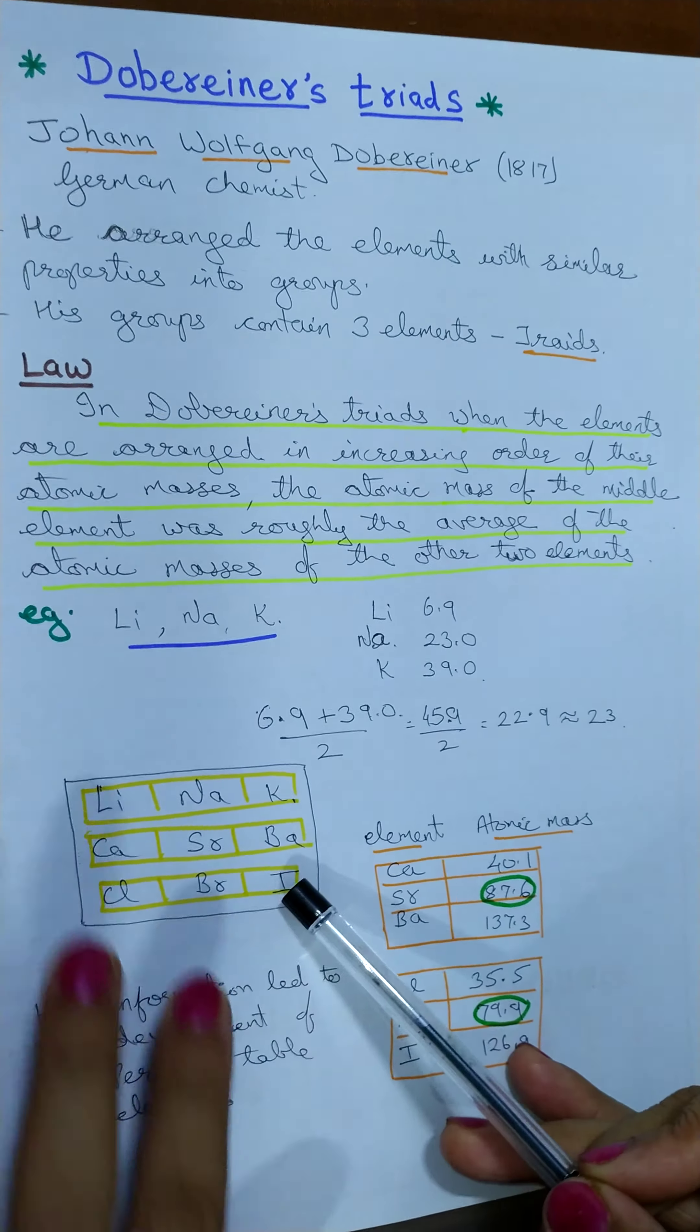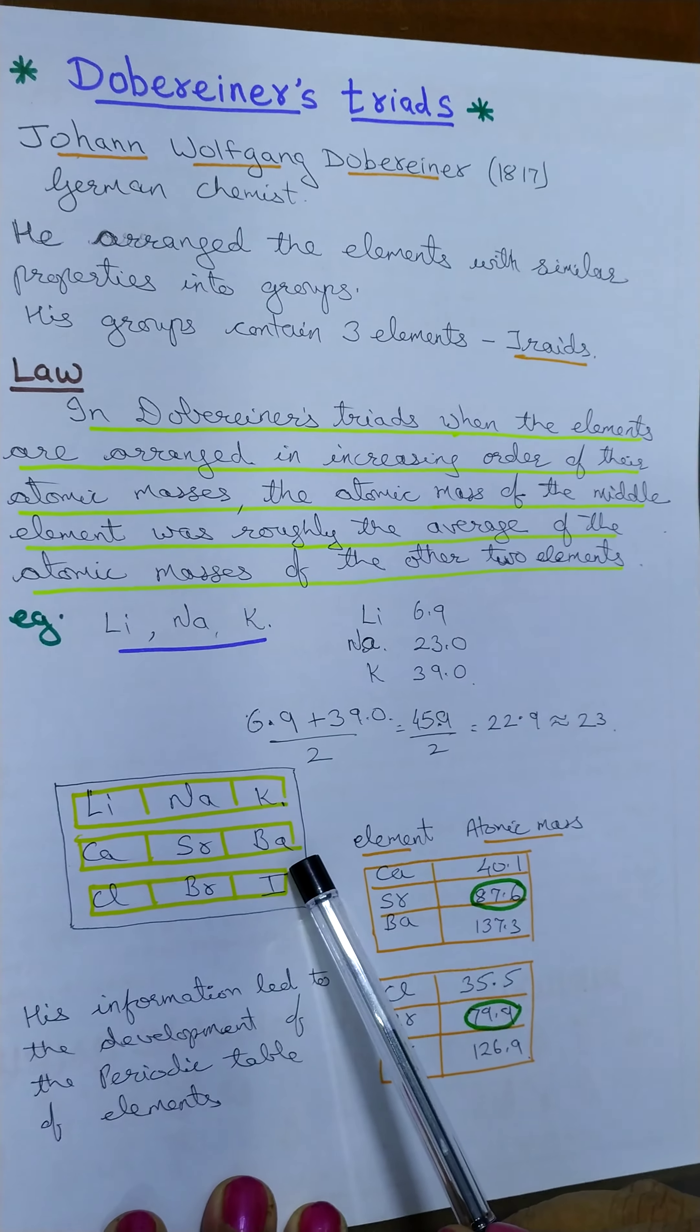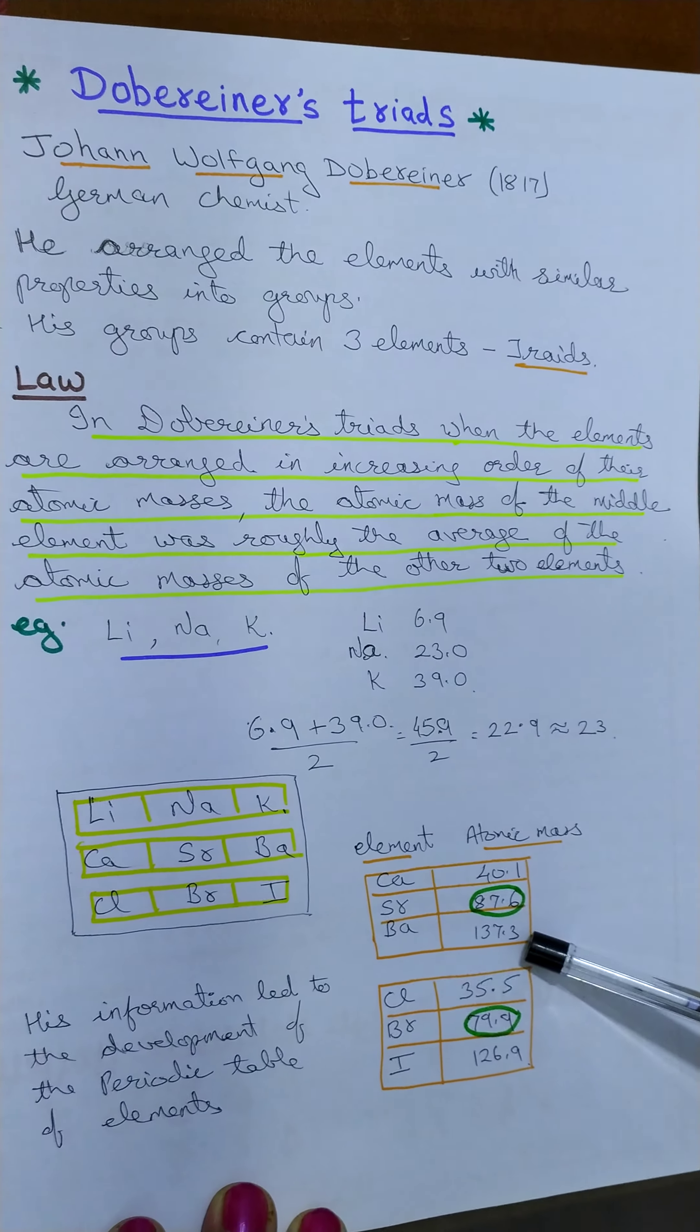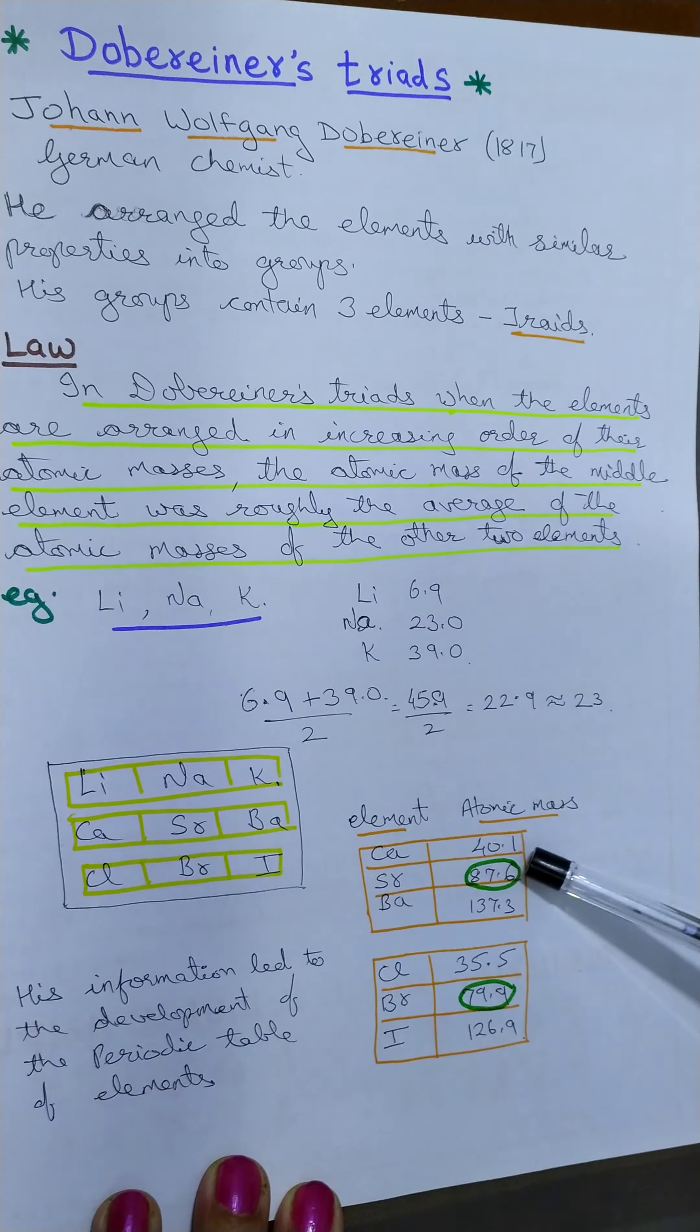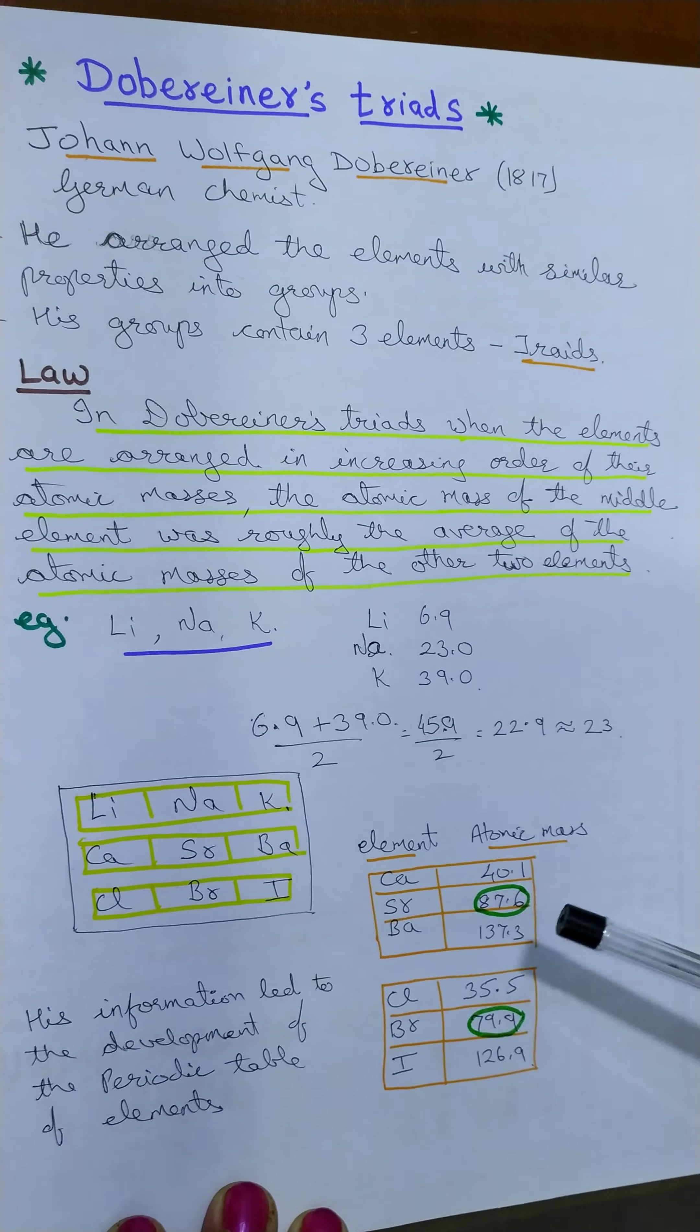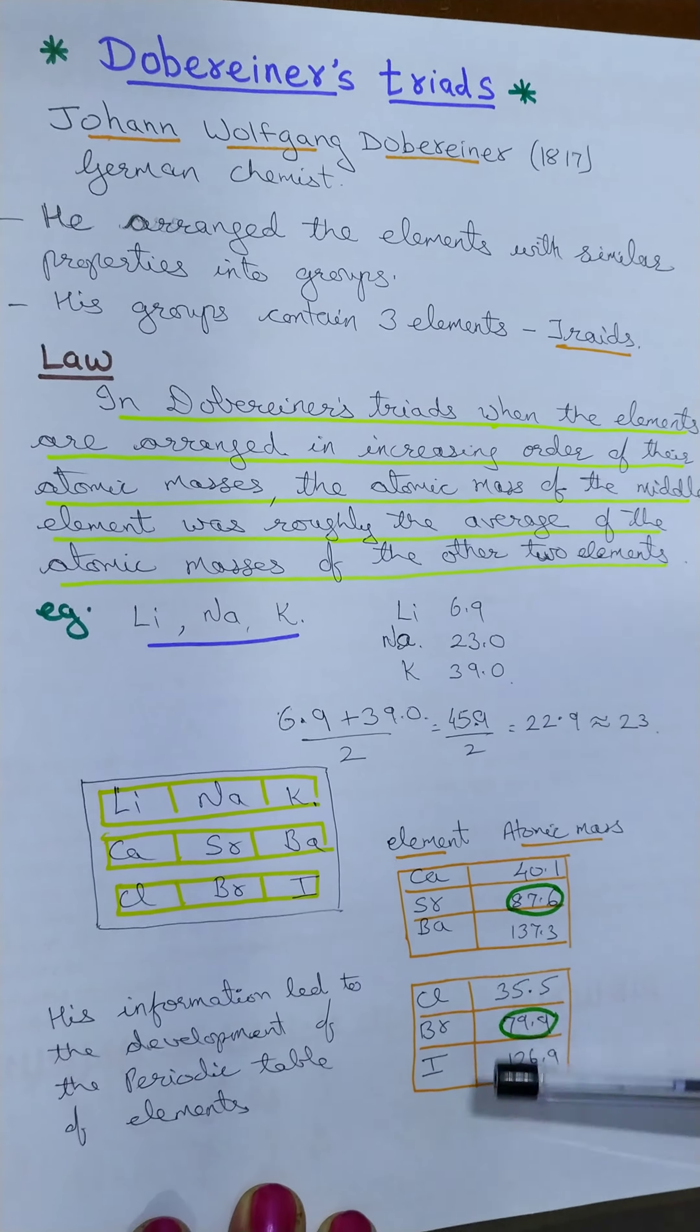Let us see another example, that is calcium, strontium and barium. Here the atomic masses are given. If you calculate, you will find that strontium having 87.6 is the mean of calcium and barium's atomic mass. And the next example,